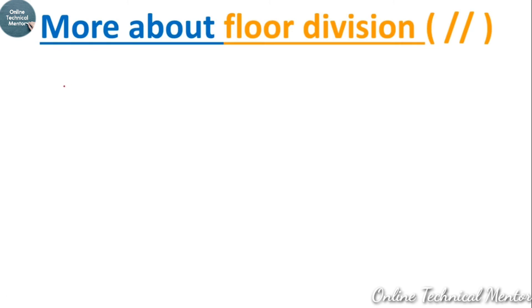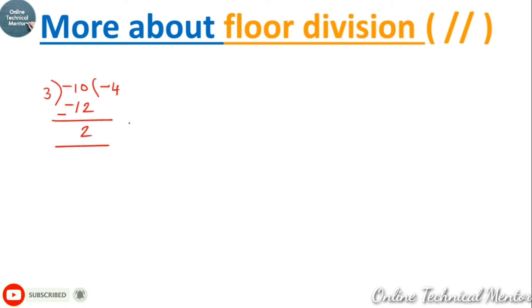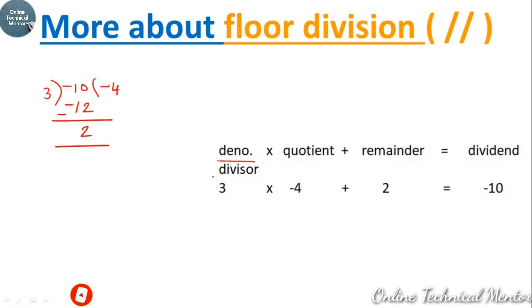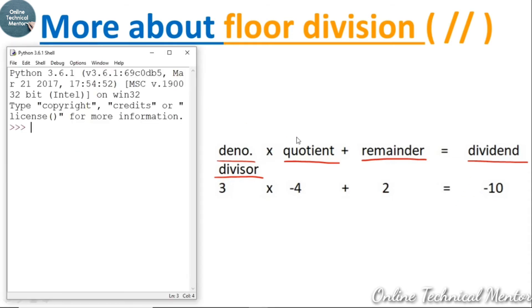Now let me show you more about floor division with negative numbers. Suppose minus 10 is floor-divided by 3. You need to find a quotient such that when multiplied by the divisor it equals or is less than the dividend. The quotient is minus 4, giving minus 12, and the remainder is 2. So: divisor 3 × quotient −4 + remainder 2 = dividend −10.